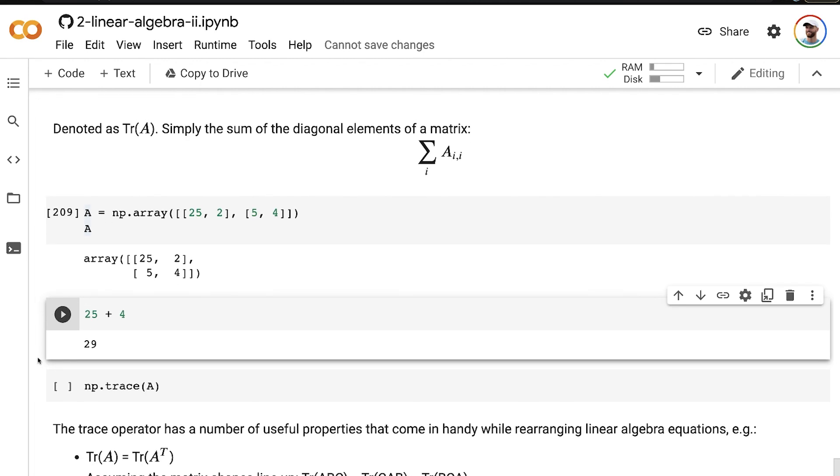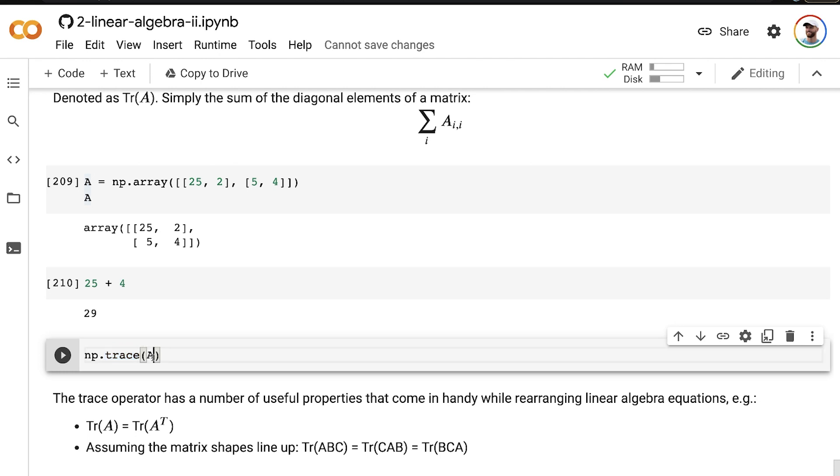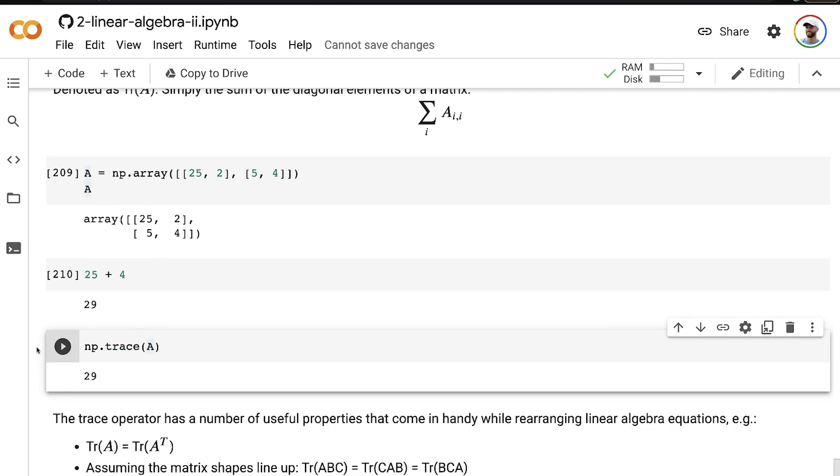Now there is a built-in numpy trace method, so we can toss A in there, and that gives us the same answer, 29.